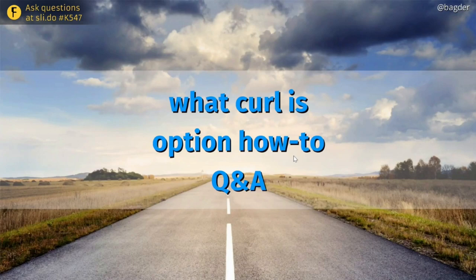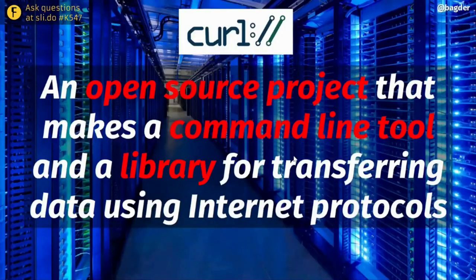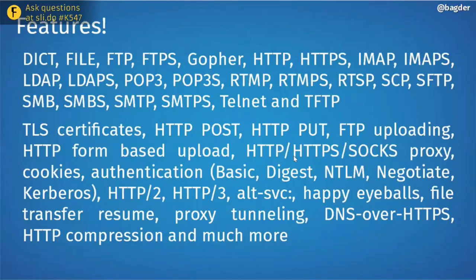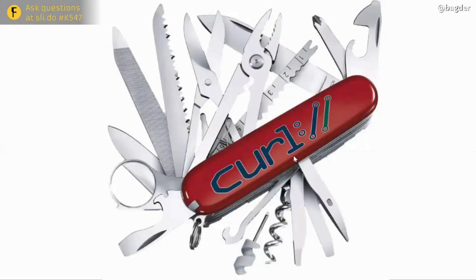Curl is an open source project. We do a command line tool and a library. We transfer data — we do Internet transfers — and we specify the transfers as URLs, which is why URL is in the name. Curl supports 24 different transfer protocols and a busload of features. You can think of curl as a Swiss army knife for Internet transfers.